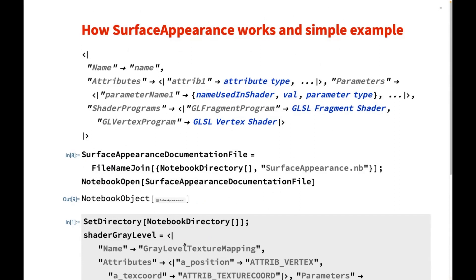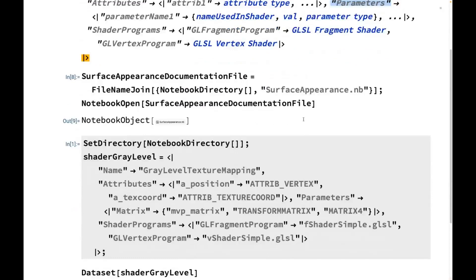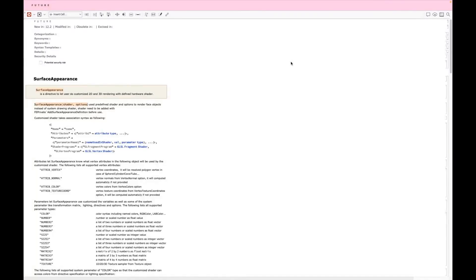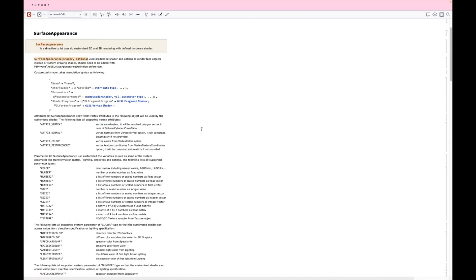How do we define SurfaceAppearance? Here is the infrastructure. You need to give it a name so that later you can reference it. You need to tell the program what kind of attributes it needs to access — like position, normals, colors. You might also want to pass along other parameters like a list of numbers, a list of integers, and colors. Finally, you need to pass in the pixel shader and vertex shader so that it can be used by the hardware. A reference notebook is attached with this talk that covers all the details.